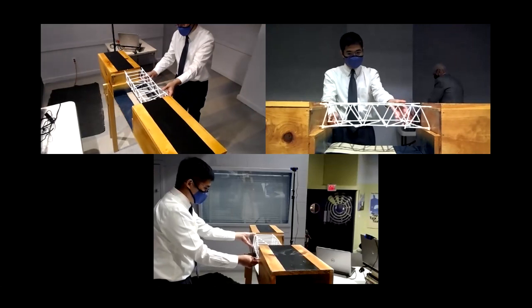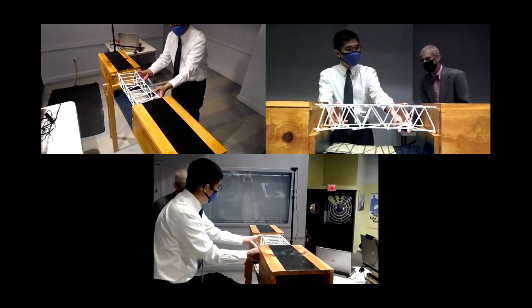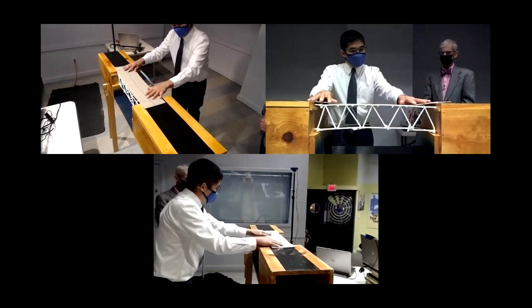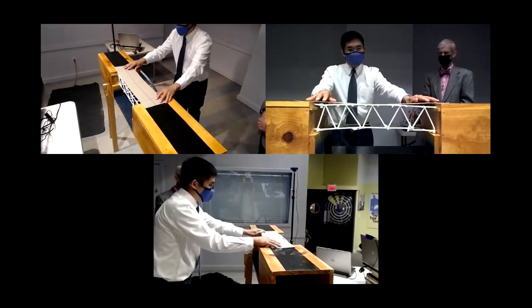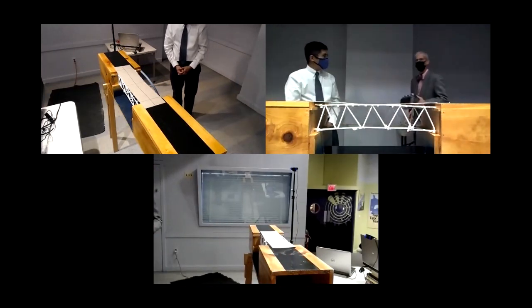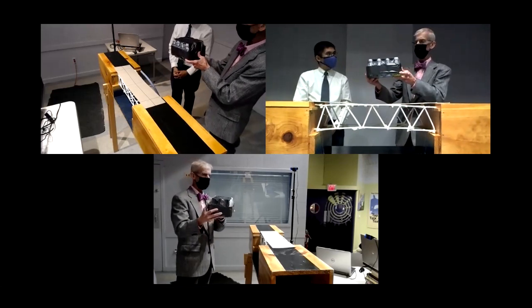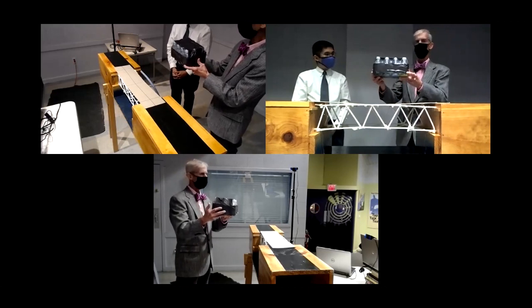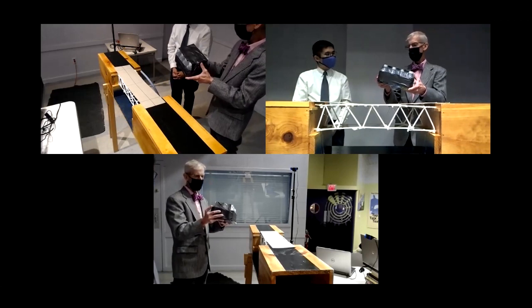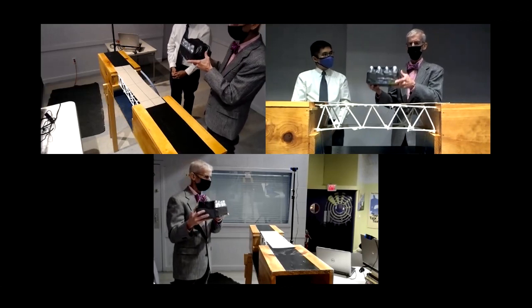Very good. And we're going to, so our challenge this year is we're going to load these bridges to destruction. Our minimum weight consists of a package of 12 eight-ounce water bottles. Each one of these water bottles is approximately nine ounces. So we'll put this one here, in the middle, carefully. Looks good, Kevin. So let's see. Do you see any deflection? Any noticeable deflection?